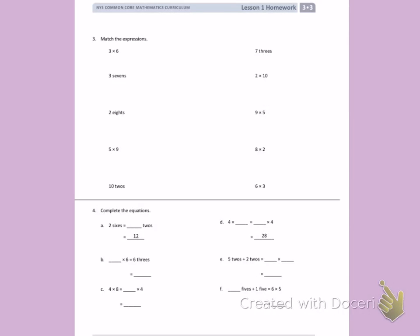So I want to draw lines that show the commutative property. I have 3 times 6, which is the same as 6 times 3. If I look down the second column, I see 6 times 3 on the bottom. I'm going to draw a line to match.